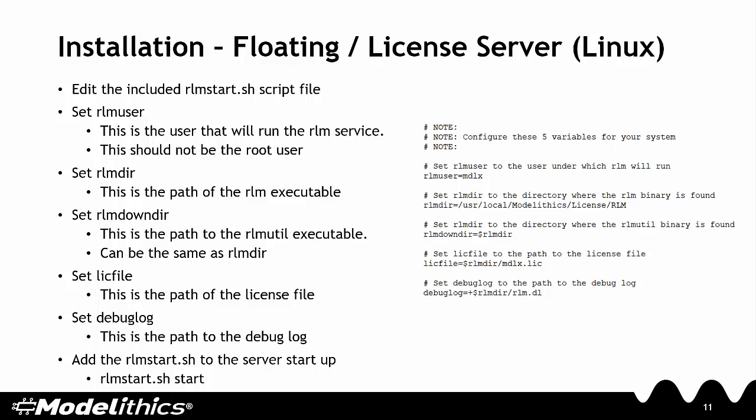When using Linux, server configuration involves editing the rlm start.sh script file. There, you can configure five variables for your specific installation: rlm_user, which is the user that will run the RLM service, as well as variables to set the paths of the RLM executable, the rlmutil executable, the license file, and the debug log. The rlm start.sh file can also be added to the server startup by using the start argument.